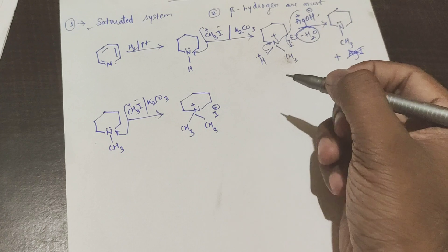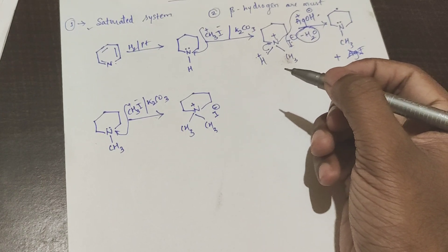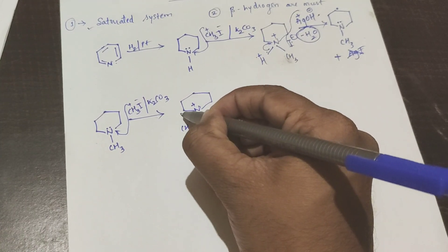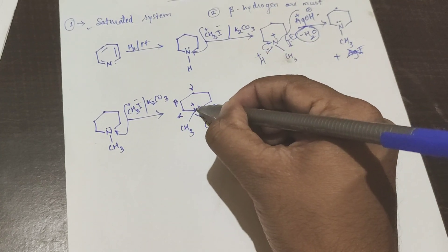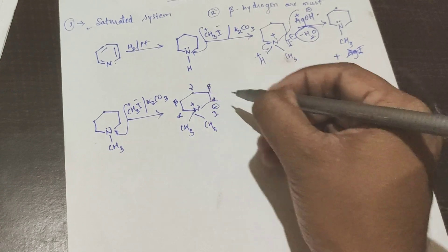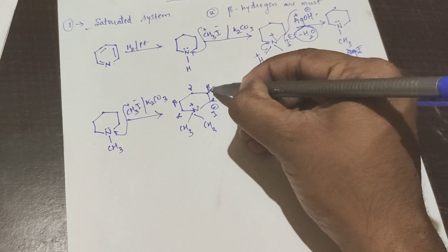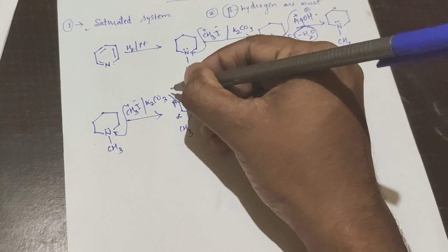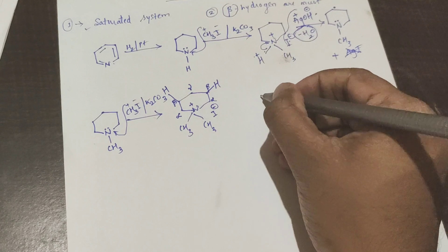This CH3 attaches and nitrogen gets a positive charge because of four bonds, and I minus is the counter ion. Now, where is the beta hydrogen? Next to the nitrogen is the alpha carbon, then the beta carbon, and we can name the next one as the gamma carbon. These two hydrogens at the beta position are very important — I told you that beta hydrogens are critical.